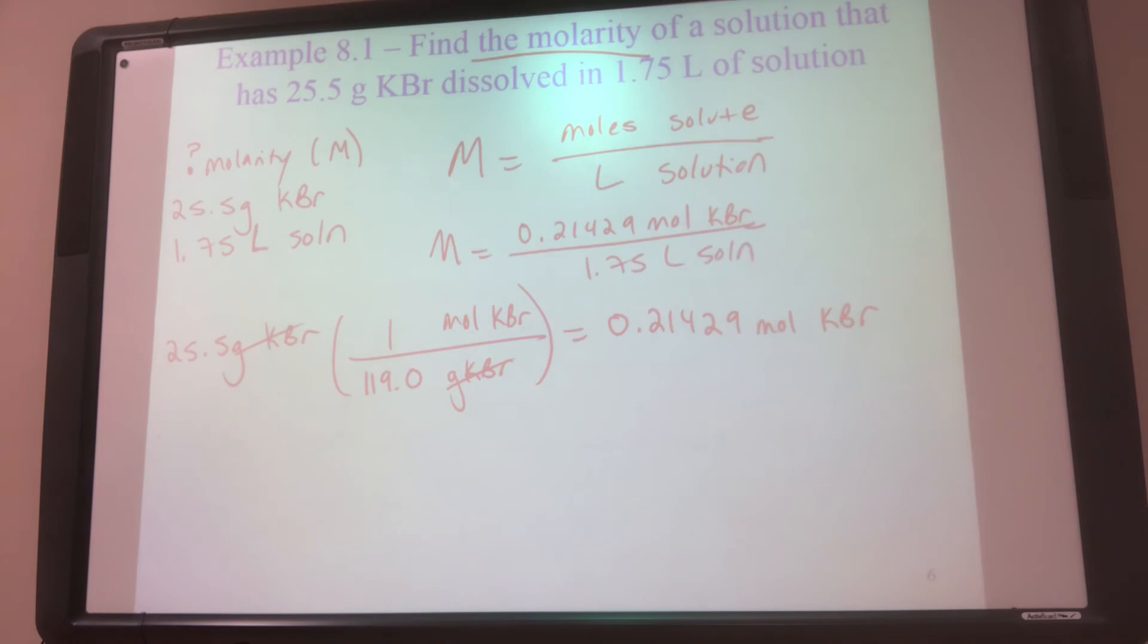Moles of my solute, liters of my solution. I just do top divided by bottom and I get 0.214. And you can either write moles over liters, but most of the time we just write big M. Because big M stands for molarity. So 0.214 molarity.